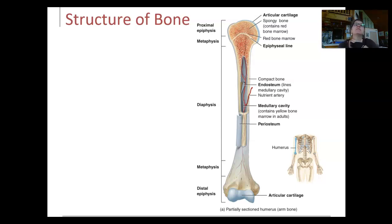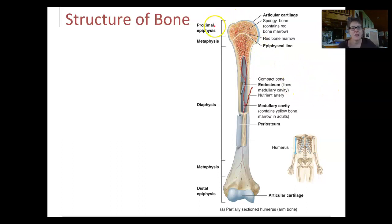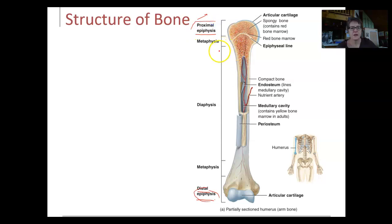We are going to focus the majority of this chapter on long bones and compact bone, more so than spongy bone. Here is a picture of a long bone — this is the humerus. When we look at this long bone, it has an end. The end is called the epiphysis. There's a proximal epiphysis because it's closer to the point of attachment, and a distal epiphysis that's further away from the point of attachment, but they are both known as an epiphysis. We have the main shaft region of the bone, which is known as the diaphysis — so the diaphysis is the shaft, and the epiphysis is the end.